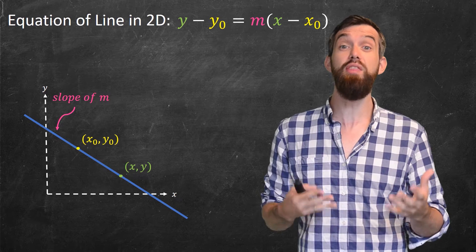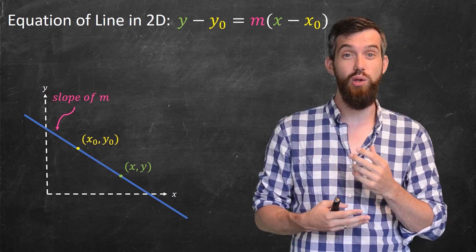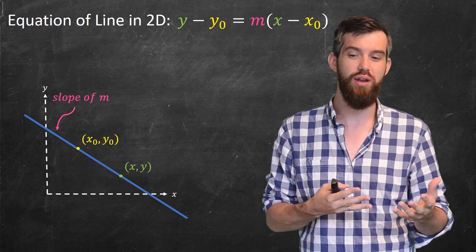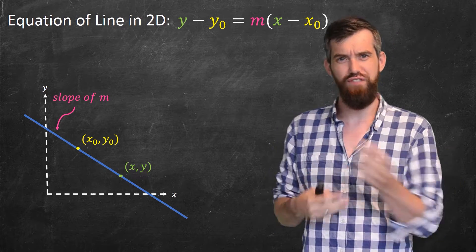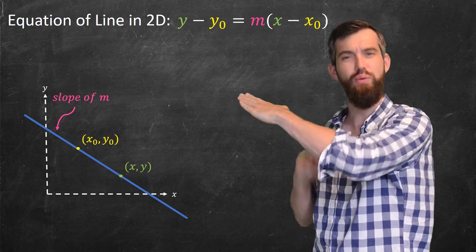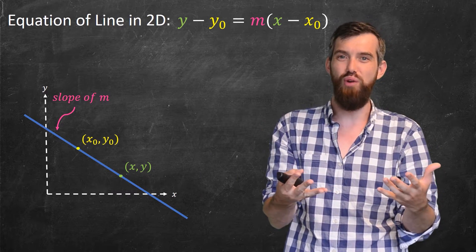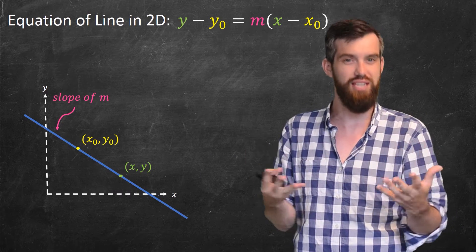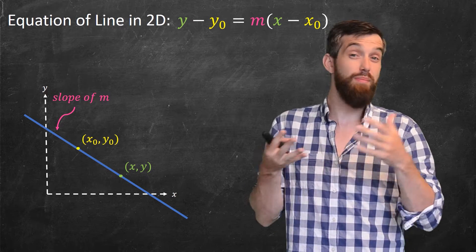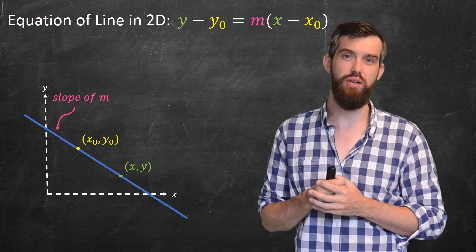In single variable calculus, we've studied the equation of a line. In its point-slope format, it would be y minus y0 equals m, the slope, times x minus x0. The x0, y0 fixes a location where the line has to go through, but there are many lines that go through any particular fixed point. So we also need something about its orientation or how it tilts in the plane — that's given by the slope m. Any other point xy needs to satisfy this condition.